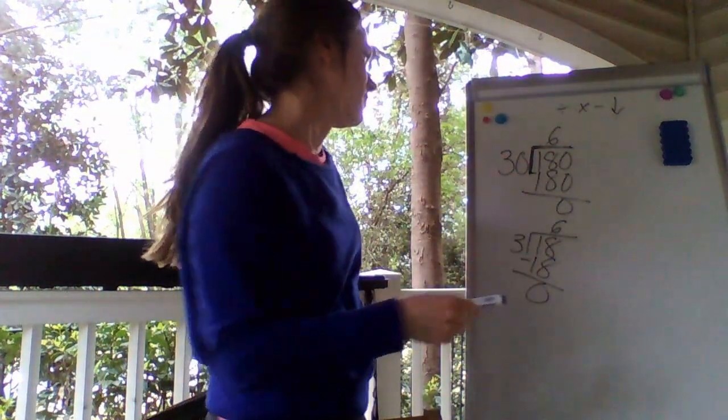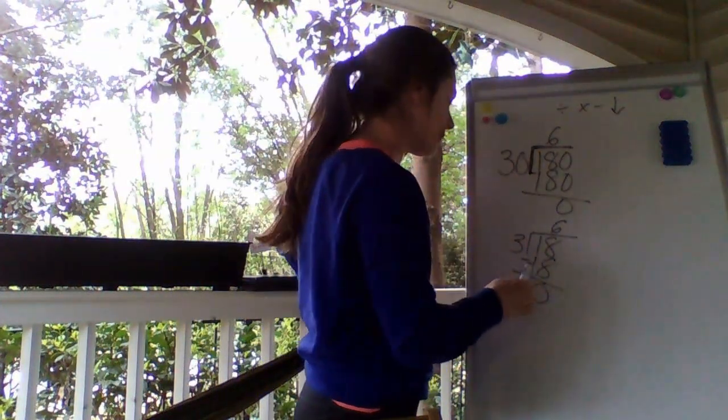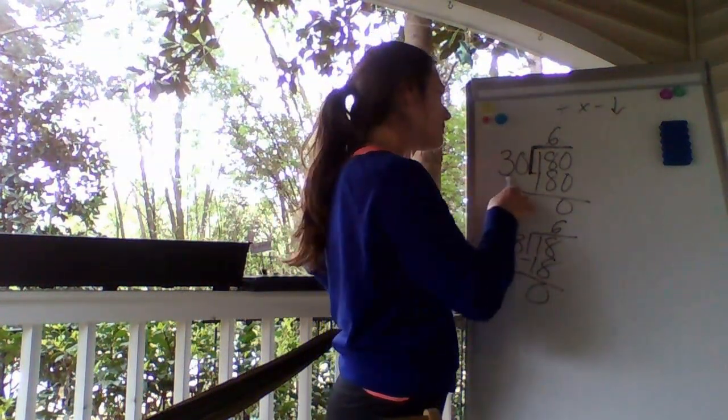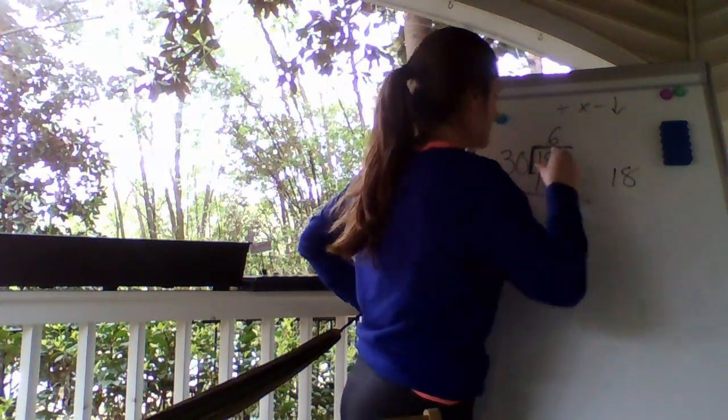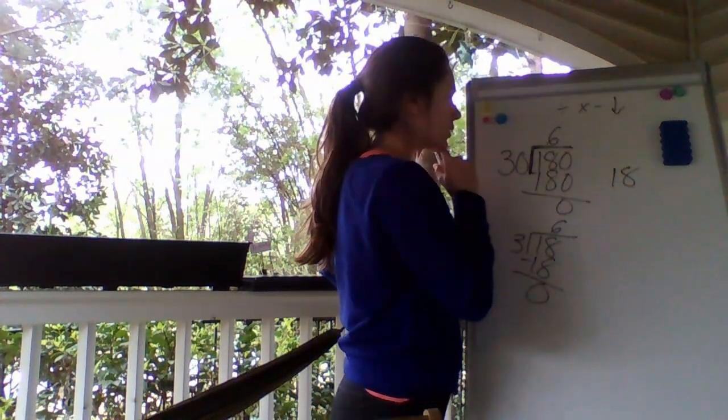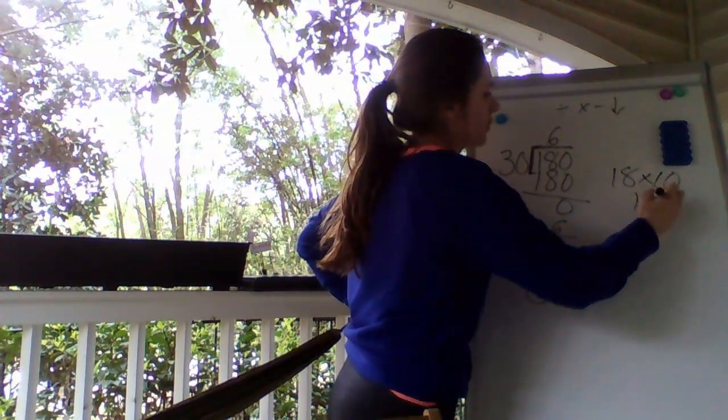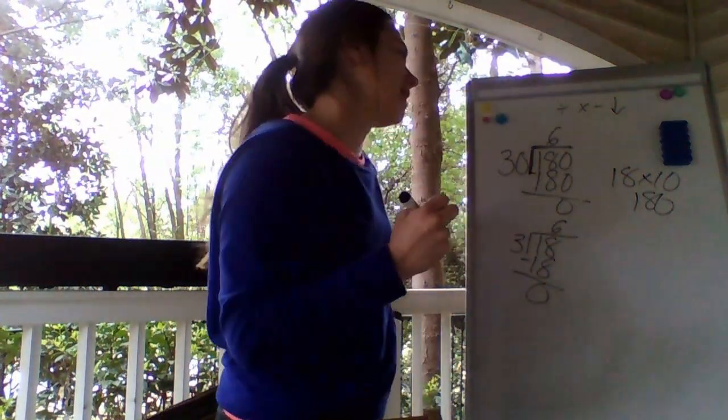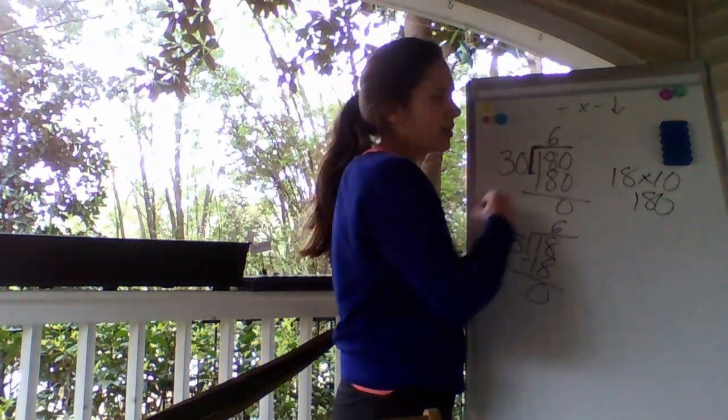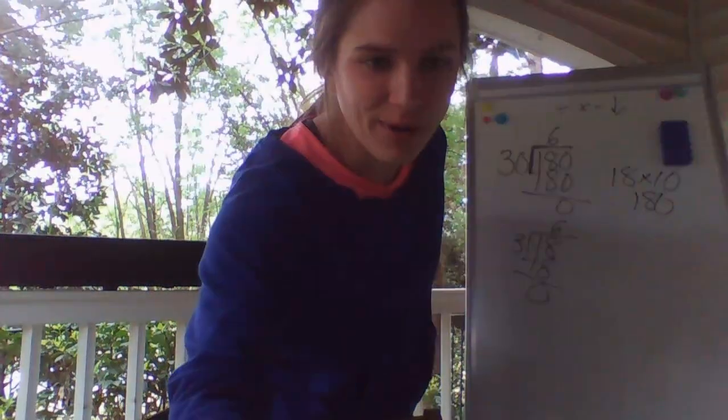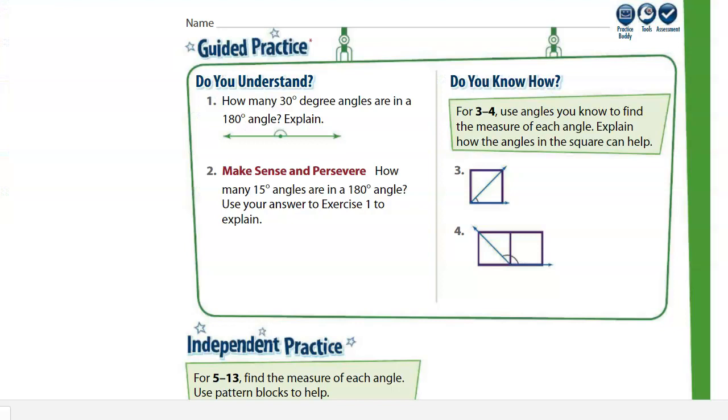6 times 30 equals 180. Now, how do we know this? We know 6 times 3 equals 18. It would just be the same thing because you're multiplying a group of 10. So 18 times 10 is 180. Let's go back to our problem. So we just solved number 1 that there is 6 thirty-degree angles in 180 degrees. So now let's go to number 2.